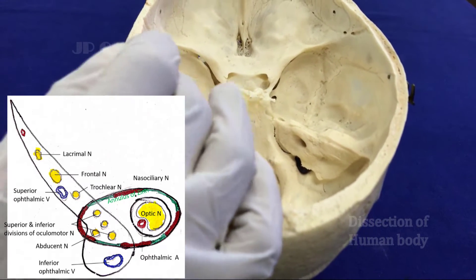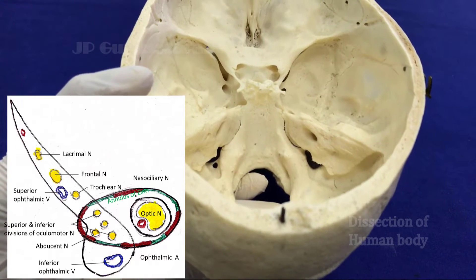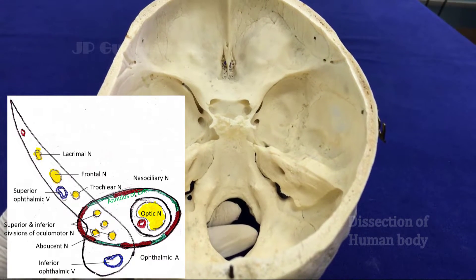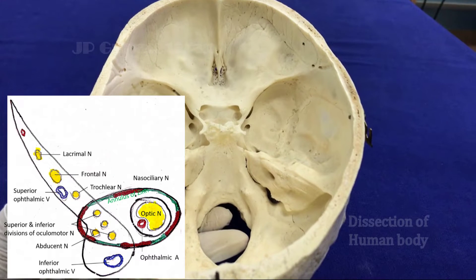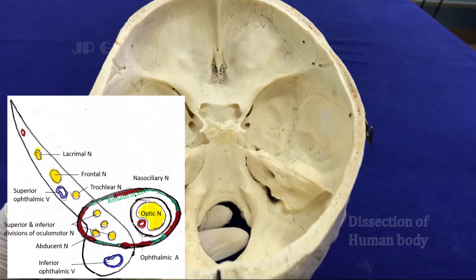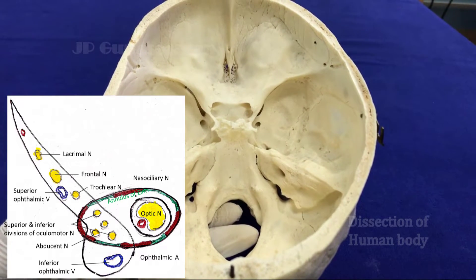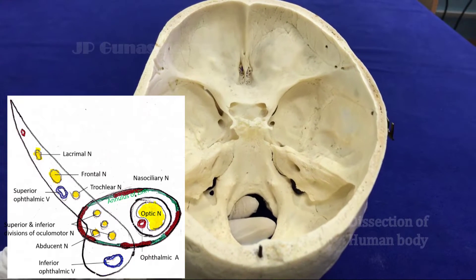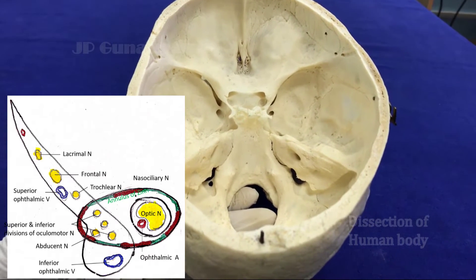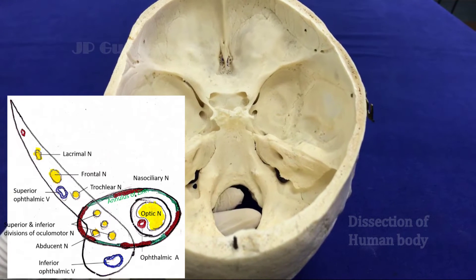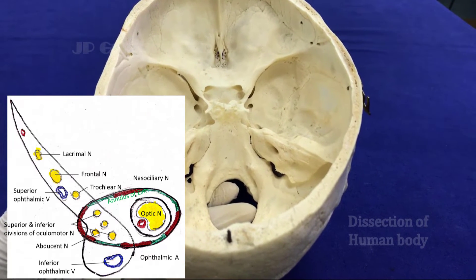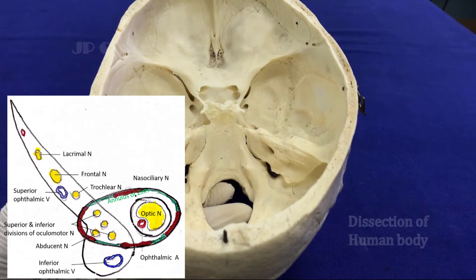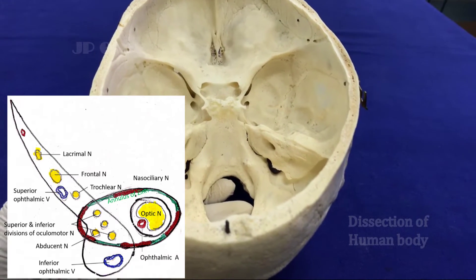The lateral compartment transmits the lacrimal nerve, frontal nerve, trochlear nerve, and recurrent meningeal branch of the lacrimal vessels and superior ophthalmic vein. The intermediate compartment transmits the nasociliary nerve, abducent nerve, and superior and inferior divisions of the oculomotor nerve. The medial compartment may transmit the inferior ophthalmic vein.